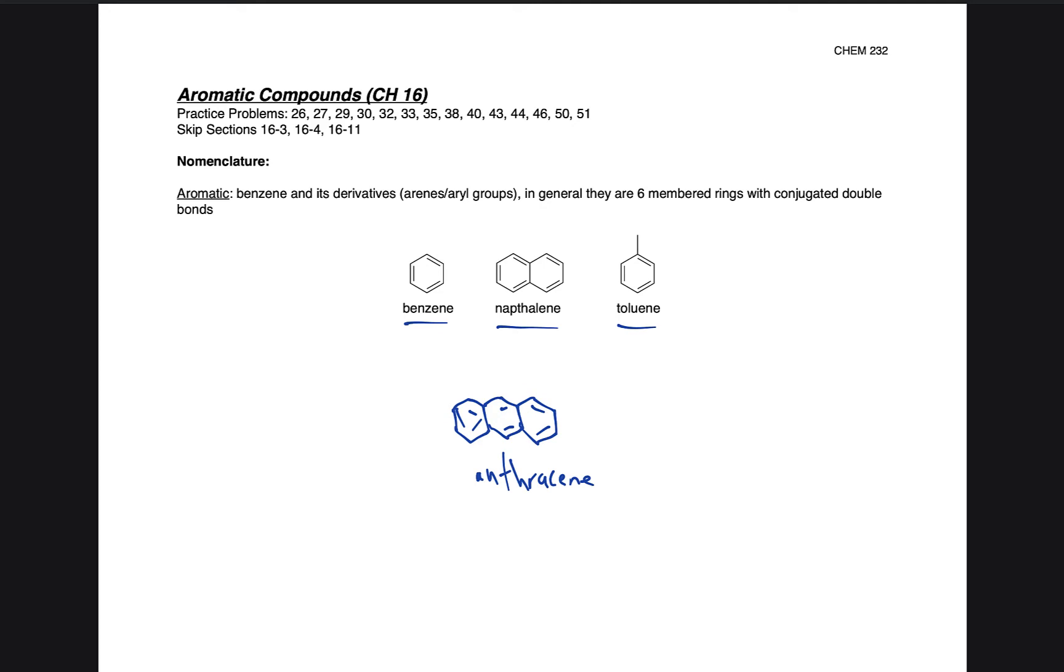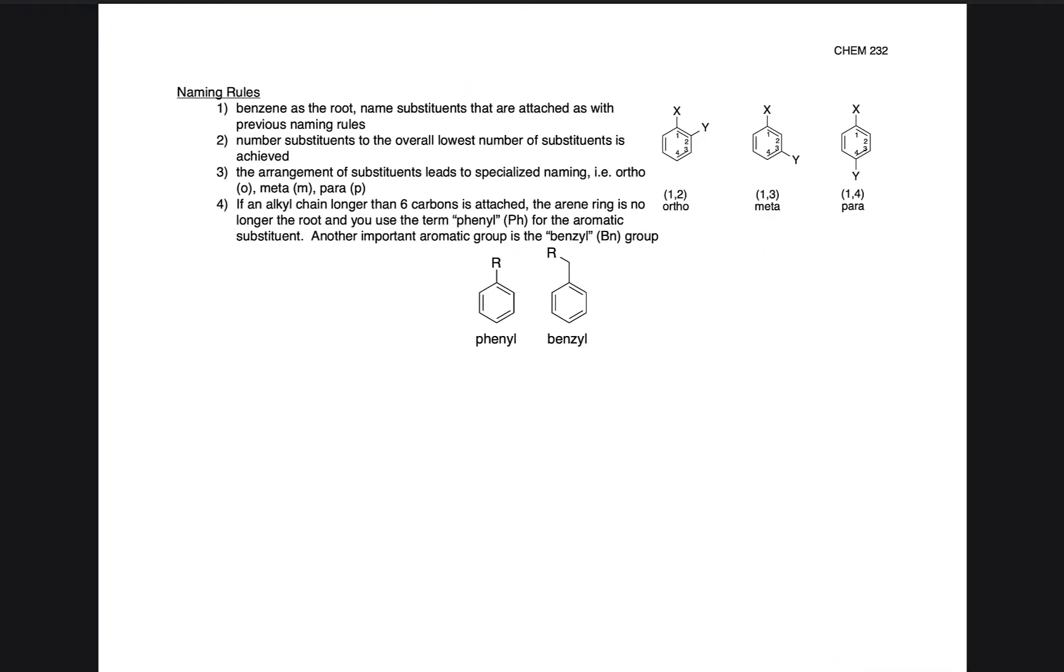We're going to look at some actual naming examples for benzene as well. If you remember our conversations from chapter 10 with phenols, all the same naming rules essentially apply. For these naming rules for benzene, we have benzene as the root. Then we name substituents that are attached to the benzene ring, with all our previous naming rules still applying, such as numbering substituents to have the overall lowest number possible.